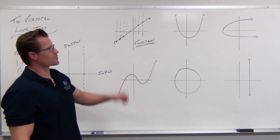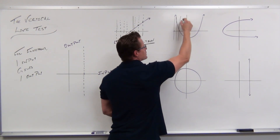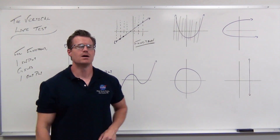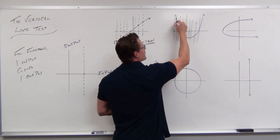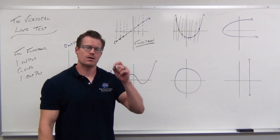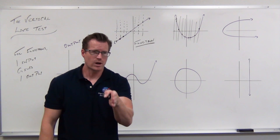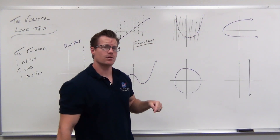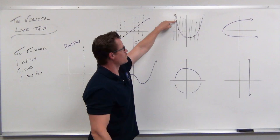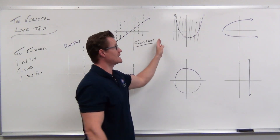What about the next one? Imagine choosing an input here and here and here and all the way down, and imagine vertical lines at every single one of those inputs. Those vertical lines represent where the output would be for that given input. Where we hit the graph, those are the outputs for those given inputs. Are we getting more than one point on a vertical line? We're getting one point for this vertical line, one point for that one, one point for this one, one point for that one. There's never a case where we're getting two outputs for any given input. This is a function.